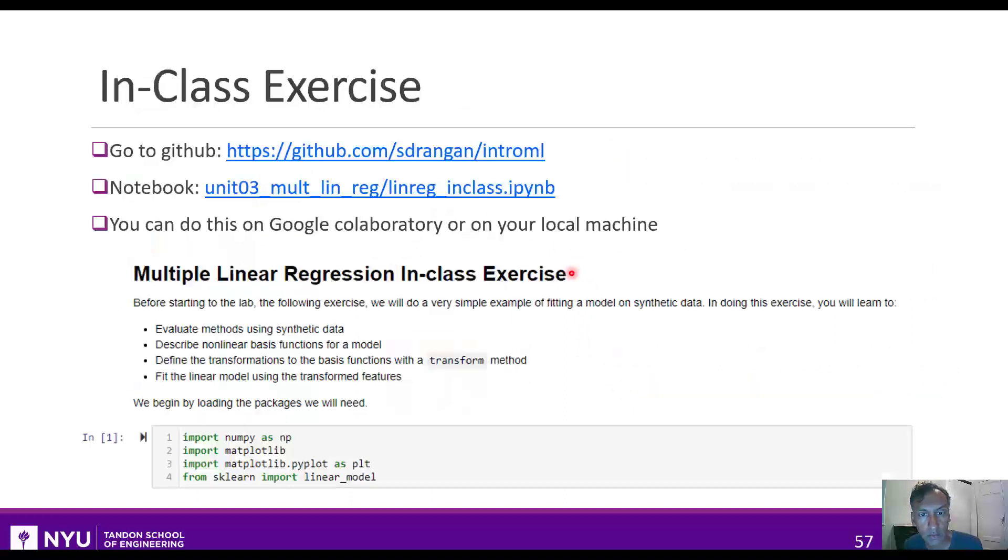Also, but before you go ahead and do that, you should try the in class exercise first, which is a much simpler problem, just to give you a quick idea of how to do the multiple linear regression. You can find it on the GitHub site at this notebook here. And you can just run that entirely on Google Colab. Or if you prefer, you can do it on your local machine, assuming you've installed all the software.